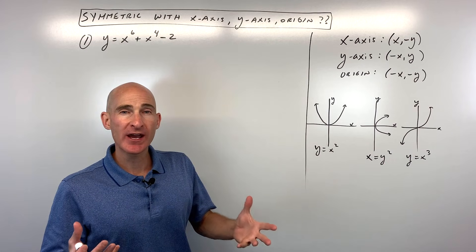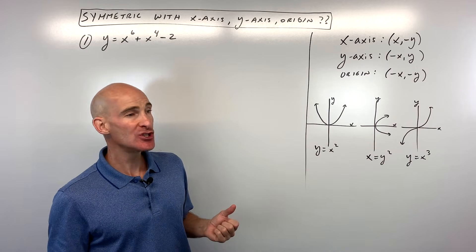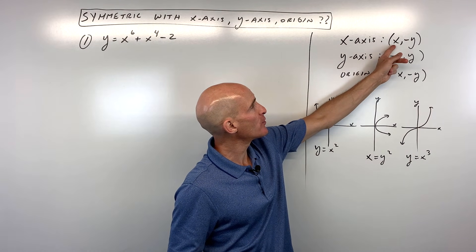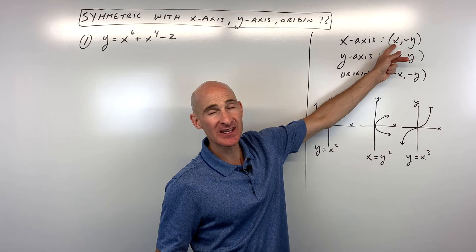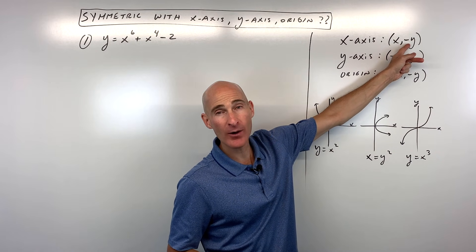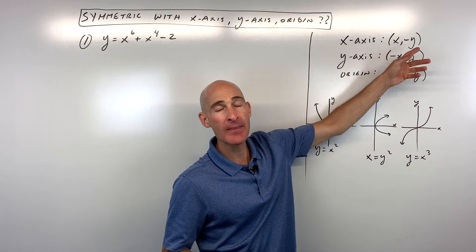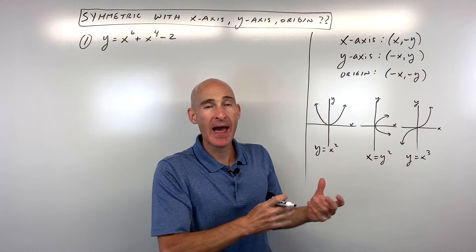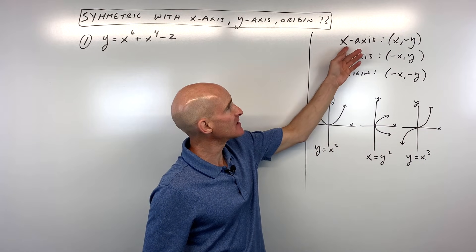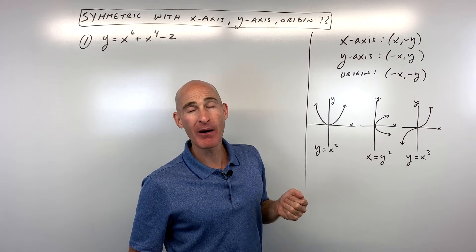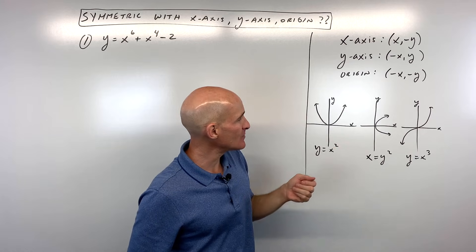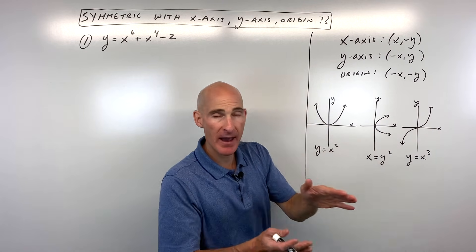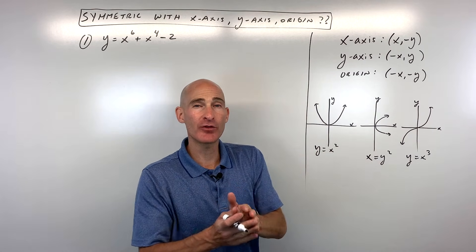These are called algebraic tests. What you can do is make some substitutions. If you replace x with x and y with negative y, and when you simplify you get the original equation back, that tells us the graph is going to be symmetric about the x-axis — meaning if you fold it over the x-axis, it's going to match with itself, a perfect match.